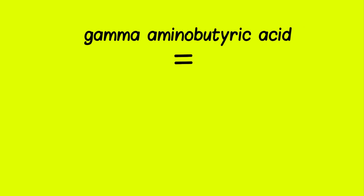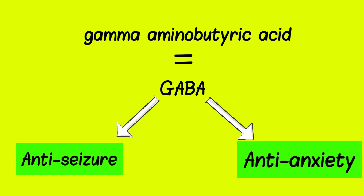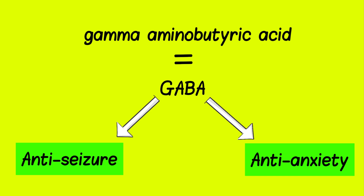Gamma-aminobutyric acid, also known as GABA, is a neurotransmitter that has inhibitory roles such as anti-seizure and anti-anxiety effects.